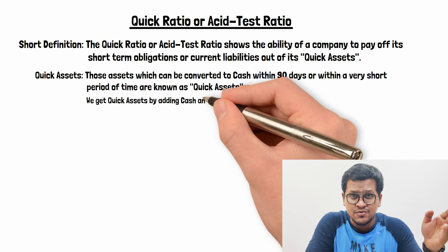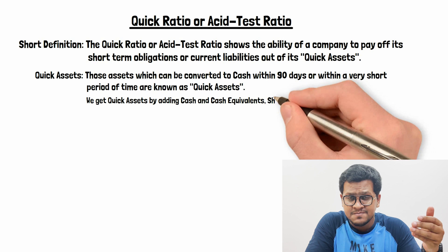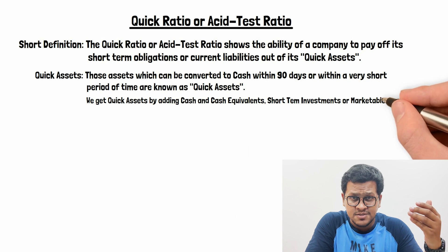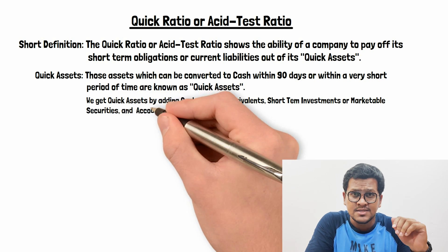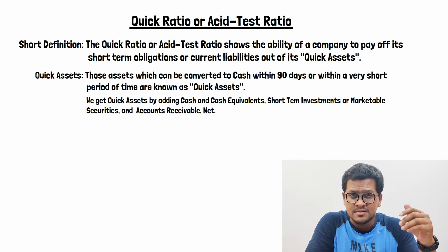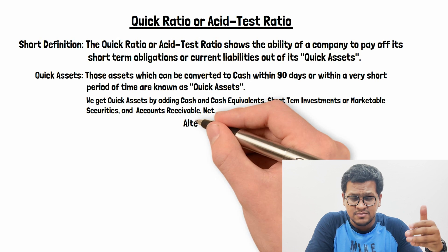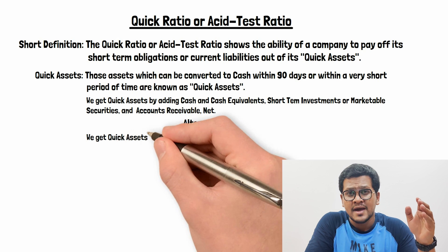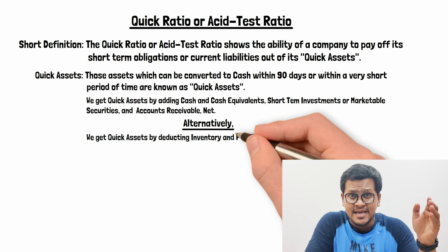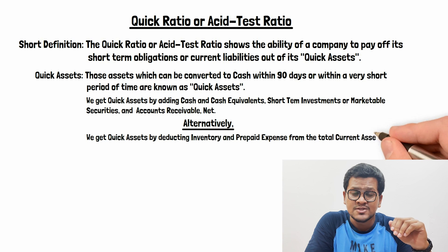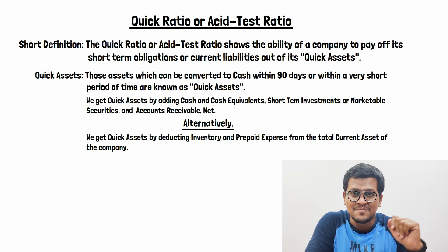Cash and cash equivalents, short-term investments or marketable securities, and net accounts receivable — these assets are considered as quick assets of a company. In some financial statements where we do not get this detailed breakdown, we get quick assets by deducting inventory and prepaid expenses from current assets.